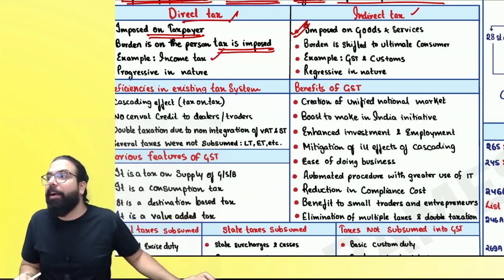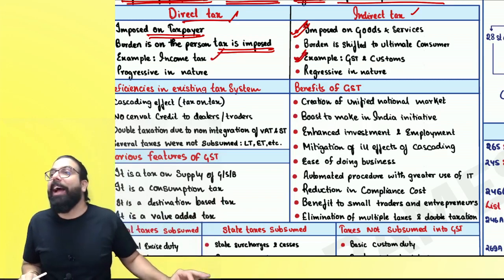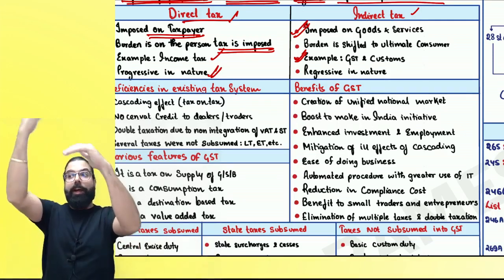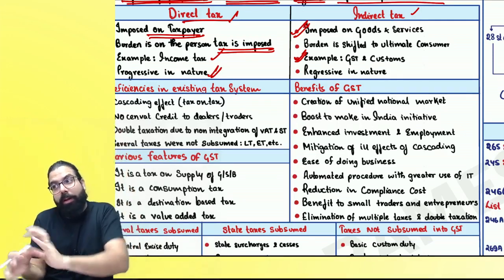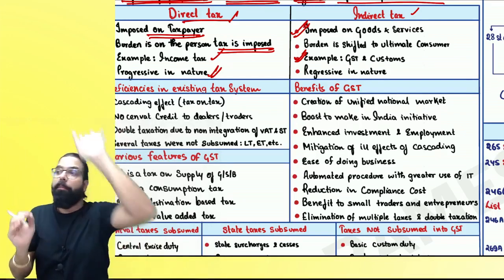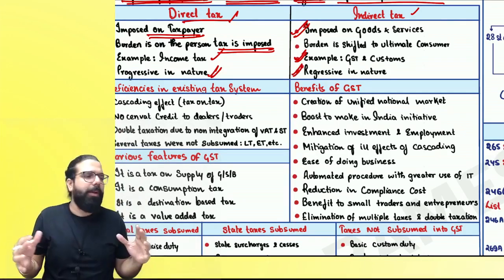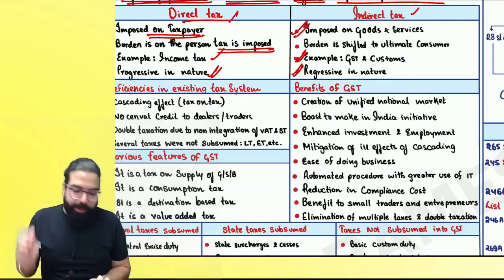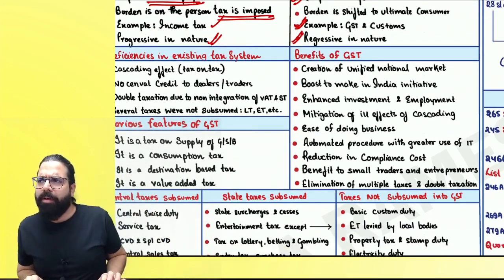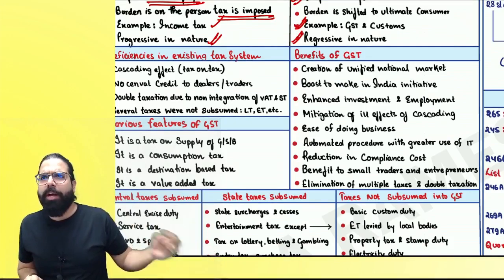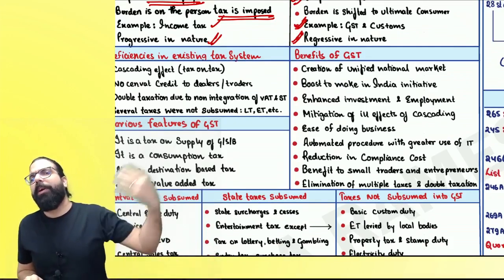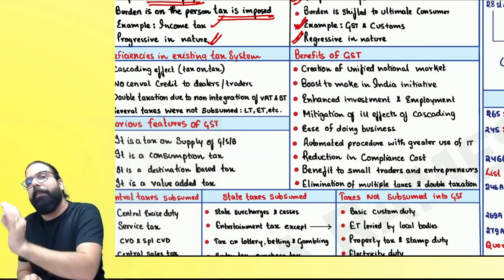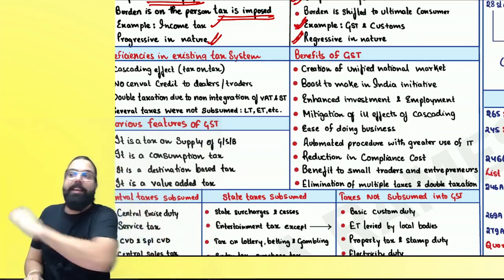Direct tax is progressive in nature — when I have no income, no tax; little income, little tax; more income, more tax. Indirect tax is regressive — it is the same for all income level groups. For example, I buy a masala dosa and pay 5 rupees as tax. A super rich person also pays 5 rupees. A poor person also pays 5 rupees. It is the same for all.